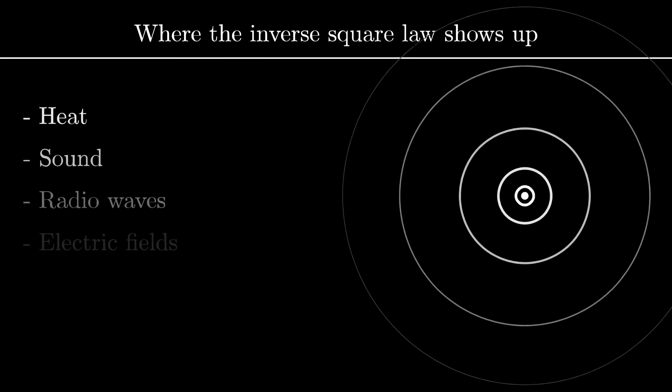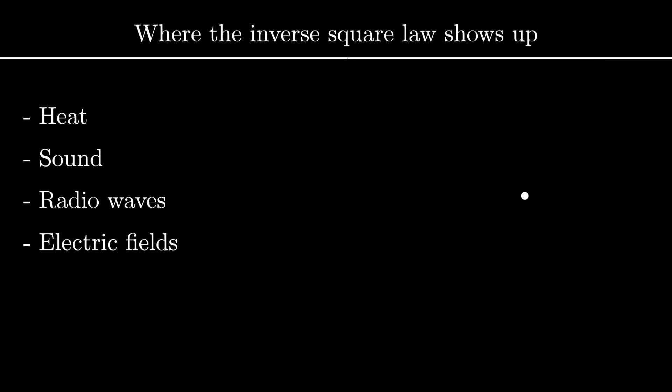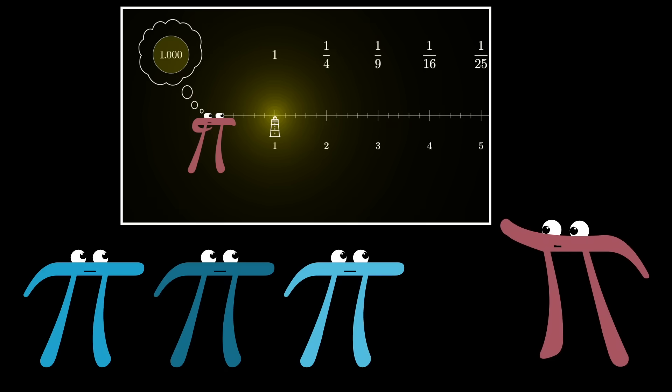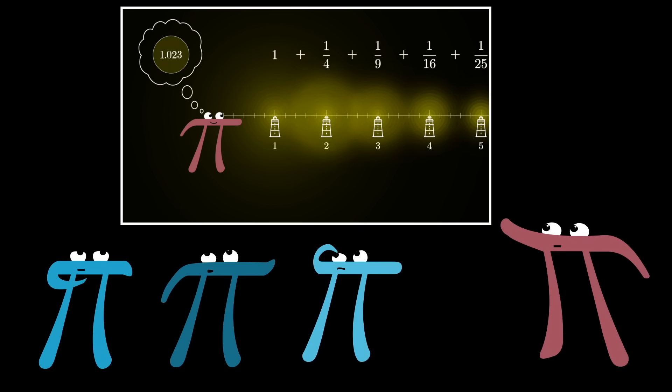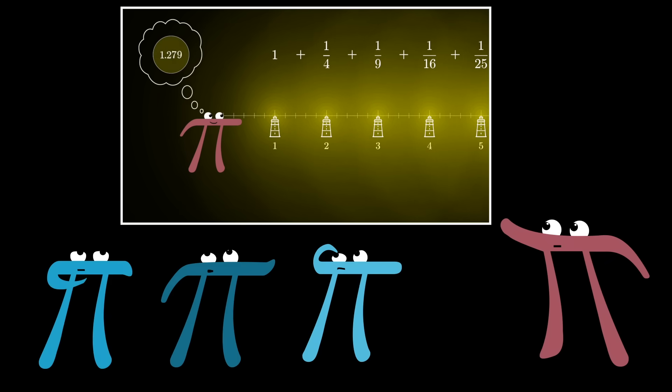And as I'm sure many of you know, this inverse square law is not at all special to light. It pops up whenever you have some kind of quantity that spreads out evenly from a point source, whether that's sound or heat or a radio signal, things like that. And remember, it's because of this inverse square law that an infinite array of evenly spaced lighthouses physically implements the Basel problem.